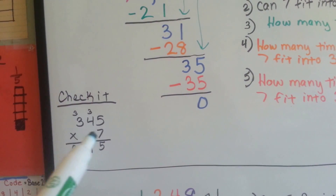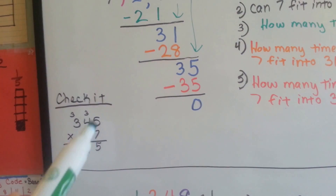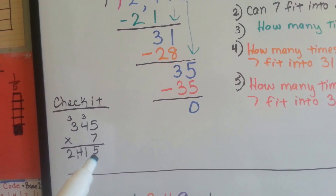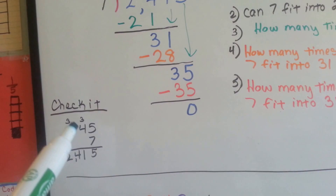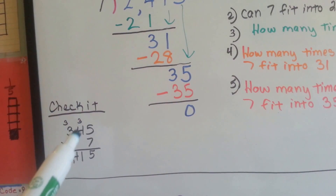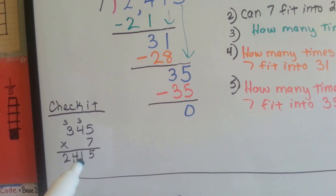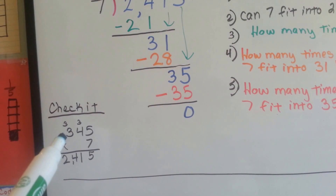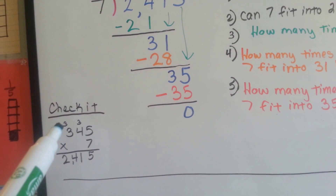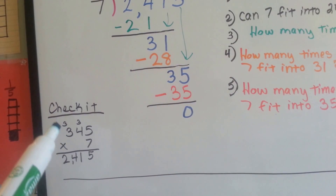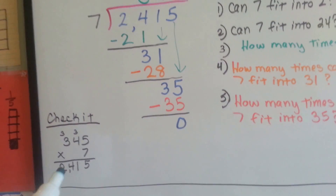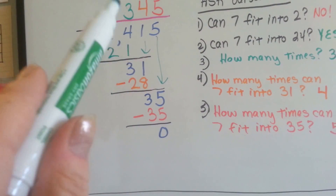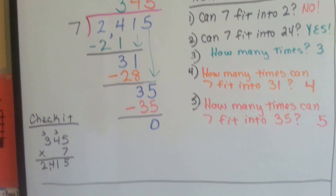So 345 times 7: 7 times 5 is 35, put the 5 down. 7 times 4 is 28, plus 3 is 31. We carry the 3, we put the 1 down. 7 times 3 is 21, plus 3 more is 24. We put the 24. So we have 2,415 — just like the dividend. We know that's the exact right answer.